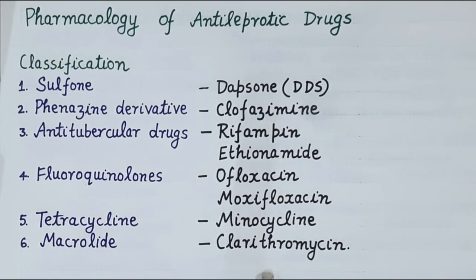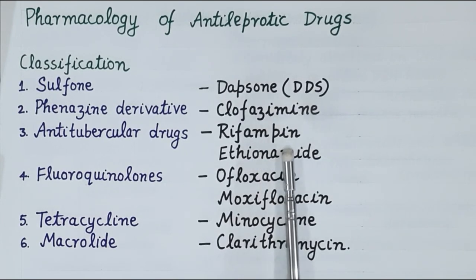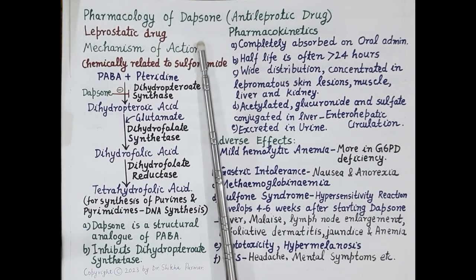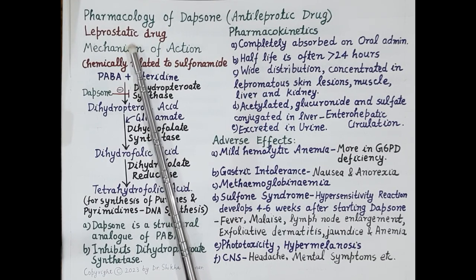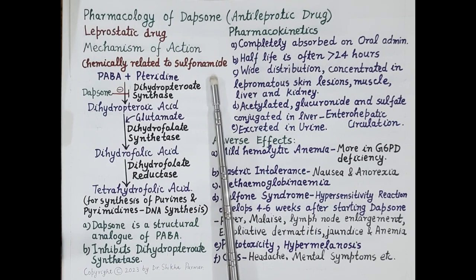In multi-drug treatment of leprosy, three drugs are used: dapsone, clofazimine, and rifampin. Our first anti-leprotic drug is dapsone. Dapsone is a leprostatic drug — it does not kill but inhibits the growth of Mycobacterium leprae. Dapsone is chemically related to sulfonamide and has the same mechanism of action as sulfonamide.